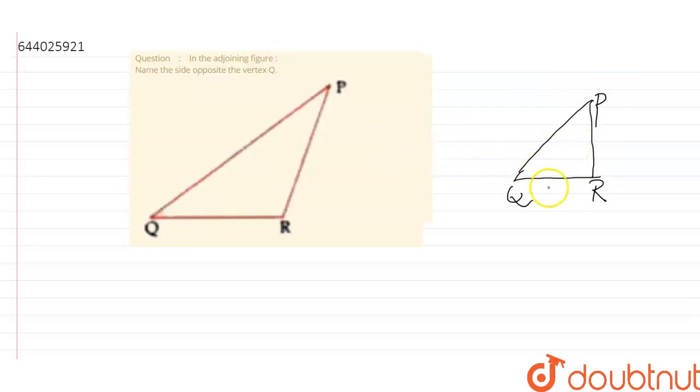And which is the vertex Q? This is the vertex Q, right? And we have to tell the side opposite to vertex Q.